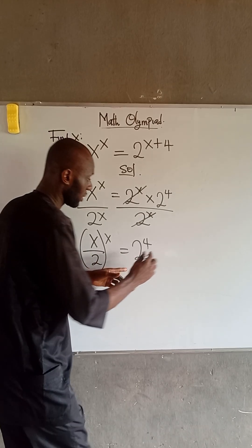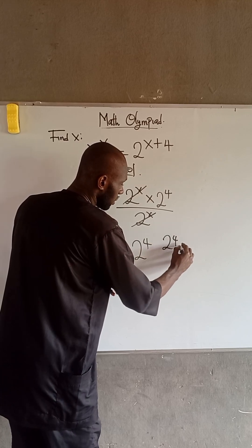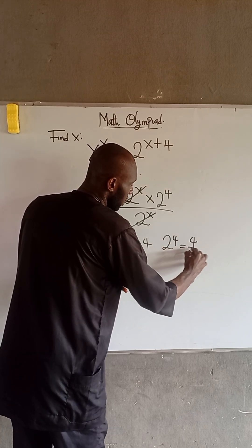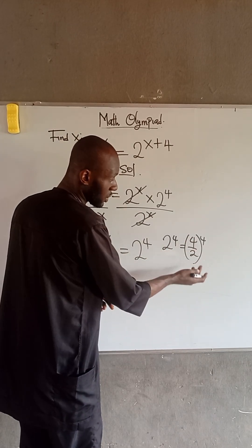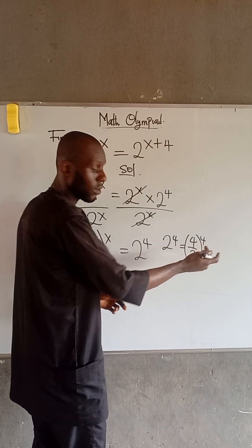So, look at this. If we have 2 to the power of 4, this can be expressed as 4 divided by 2, all raised to the power of 4. This is because 4 divided by 2 is 2, and also we have the power of 4.